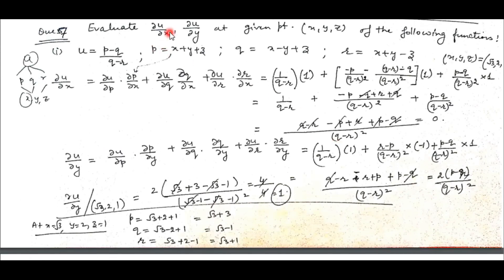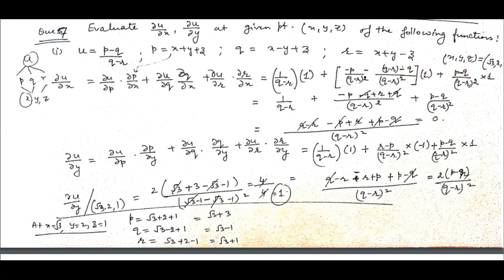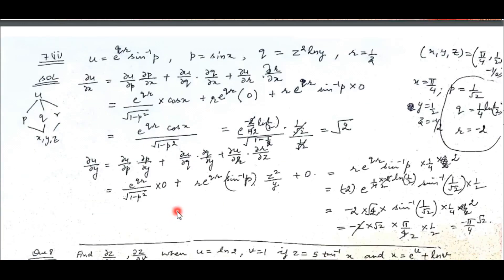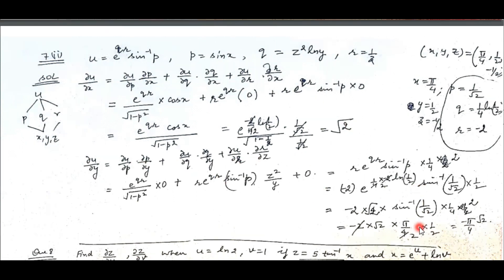In question number 7, we have to find out the partial derivative of u with respect to x as well as u with respect to y, where u depends on p, q, r and p, q, r are functions of x, y, z. Again, we apply the chain rule, substitute all derivatives, simplify, and we get the value at the point (√3, 2, 1). Same way in question number 7 second part: again u is a function of p, q, r and further p, q, r are functions of x, y, z. To find the derivative of u with respect to x and u with respect to y, apply the chain rule, substitute all values, and after simplifying you get the value of the derivative.